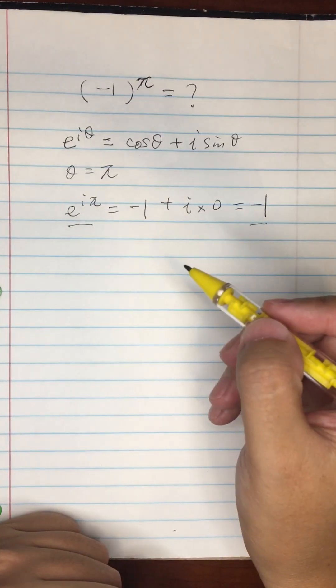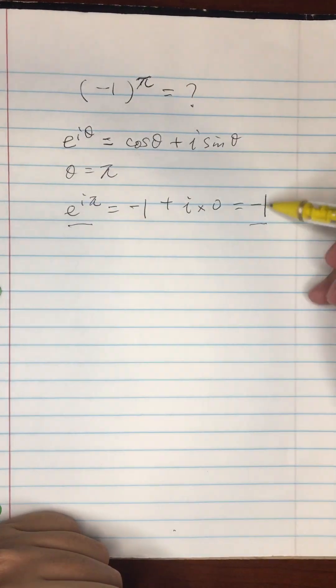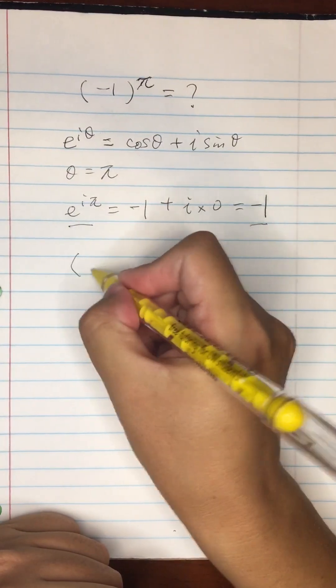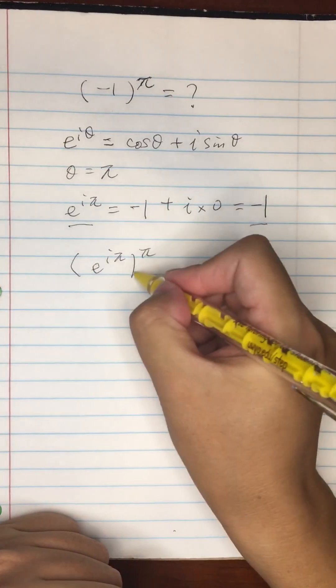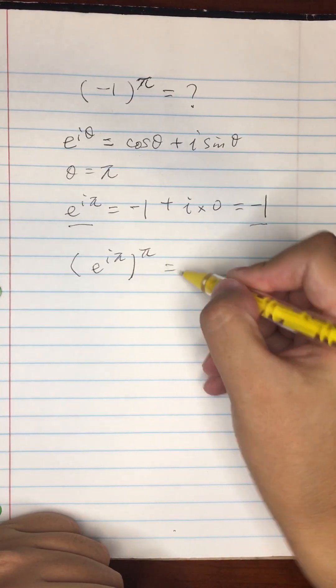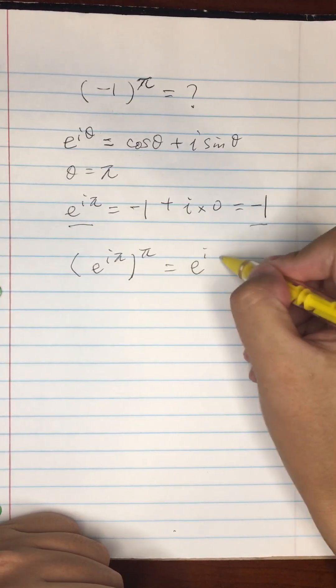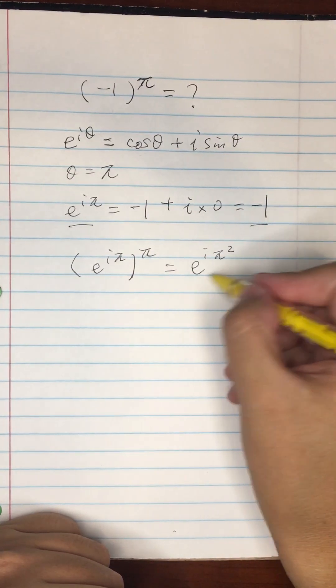So now we know that minus one equals to e to the i pi. All we have to do is actually replace minus one with e to the i pi into this expression. So e to the i pi to the pi's power. At this point we can just multiply into it, so e to the i pi squared.